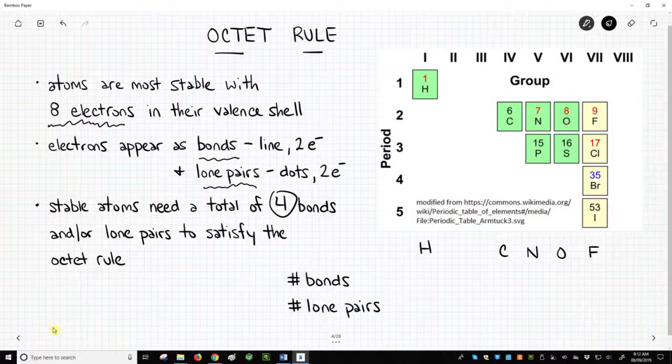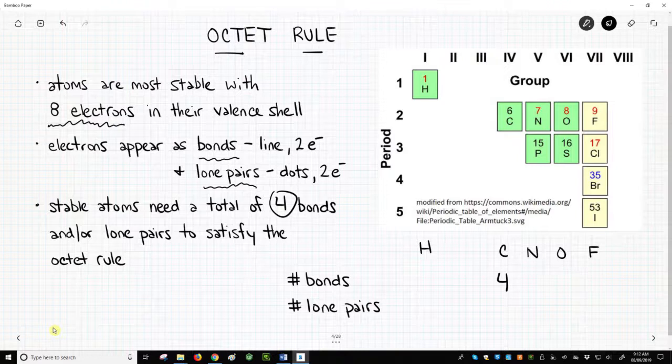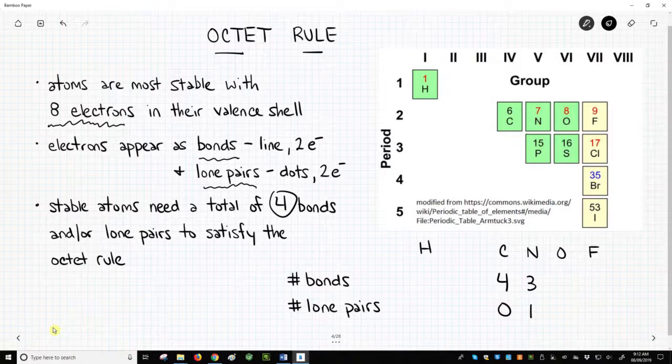Carbon atoms will always have four bonds to complete the octet electrons, with no lone pairs. Nitrogen atoms will have three bonds and one lone pair to fulfill the octet rule. Oxygen atoms will have two bonds and two lone pairs.